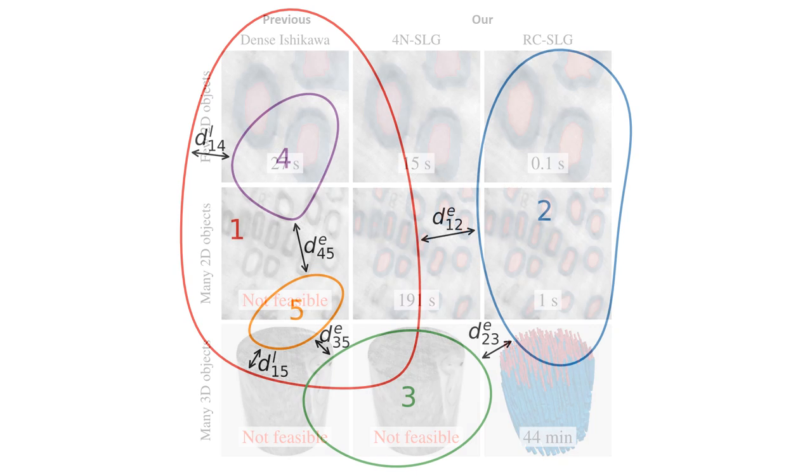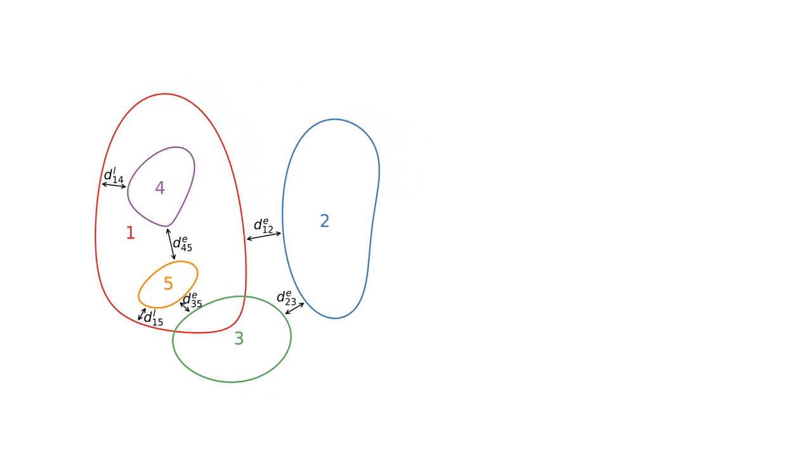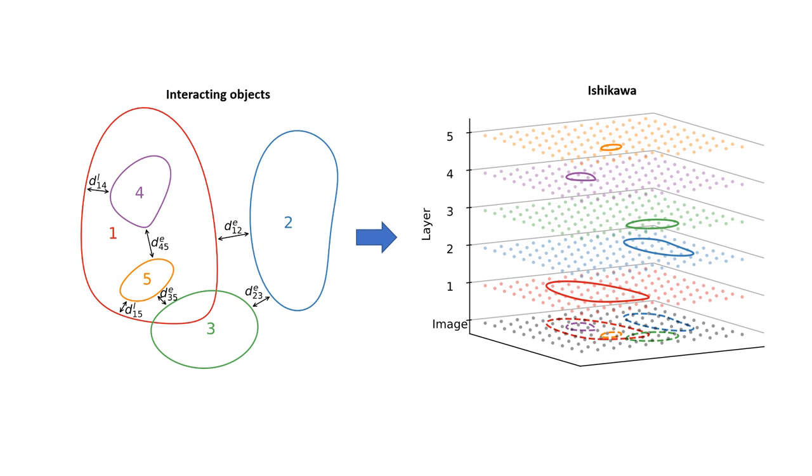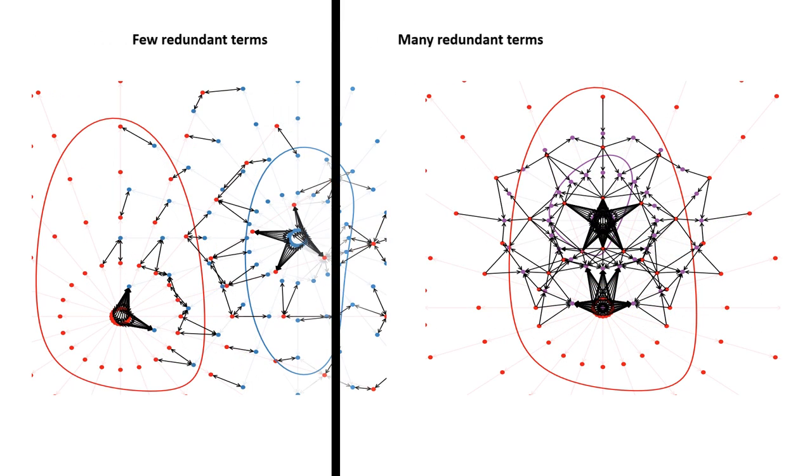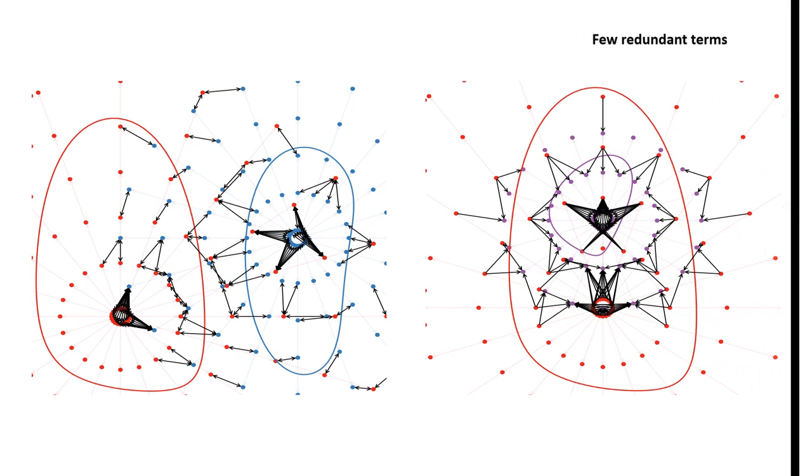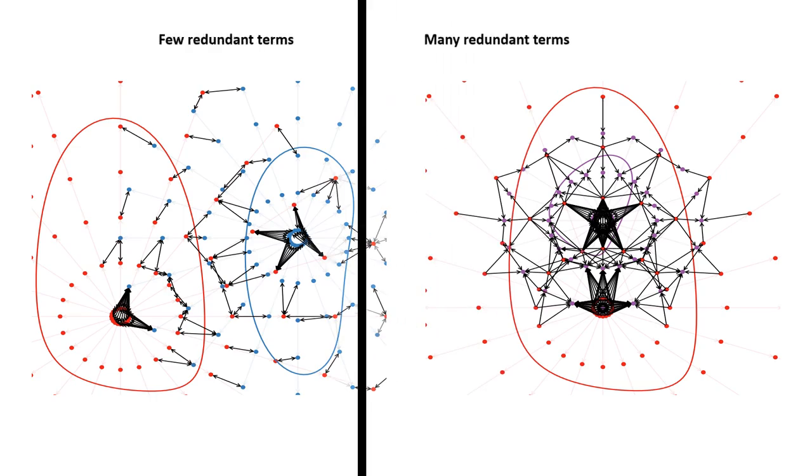Our method is based on the widely used Ishikawa layer technique, where each segmentation label is represented by a layer in the graph. Using sparse layers, we reduce the size of the graph significantly without affecting the segmentation by avoiding many irrelevant graph nodes. To further reduce the graph size, we avoid many redundant terms using our method with the ordered multi-column graph structure.